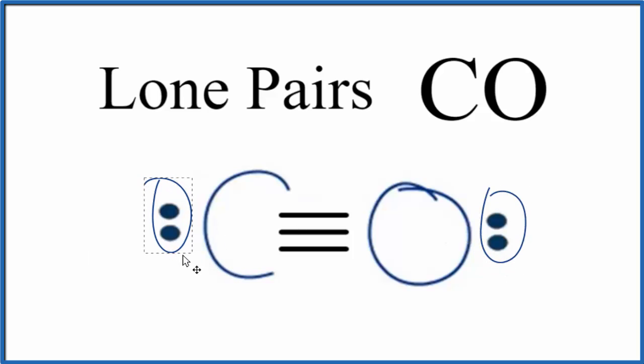And for carbon monoxide, we have one, two. So we have two lone pairs, and then we have one, two, three, three bonded pairs of electrons.